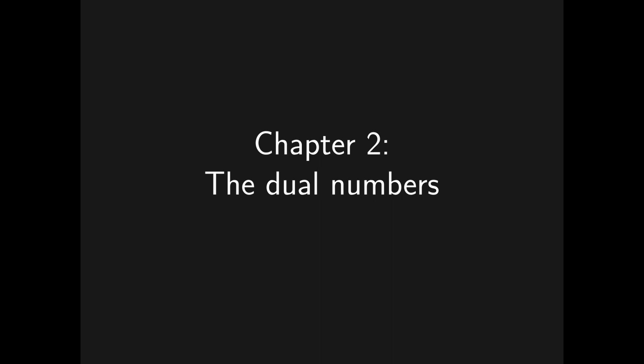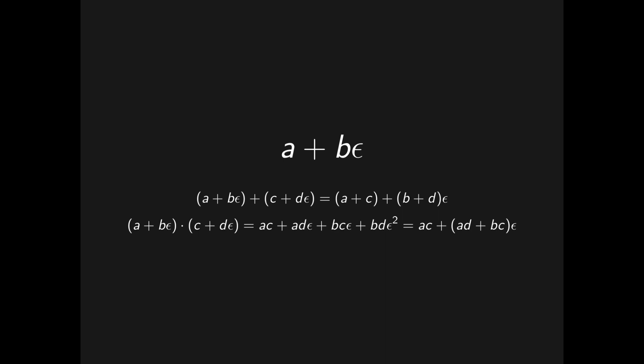So what can we do with epsilon? Well, we can multiply it with any real number, and we can add real numbers to it. From this we can see that we get numbers of the form a plus b epsilon, where a and b are real numbers. These numbers again can be added in the way that we would if epsilon were a variable, and they can be multiplied using the distributive rule, and that epsilon squared is equal to zero.